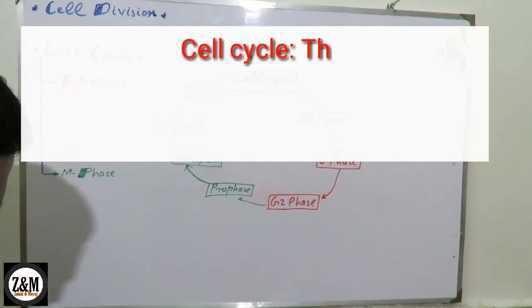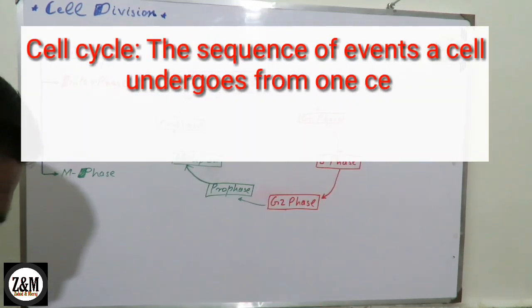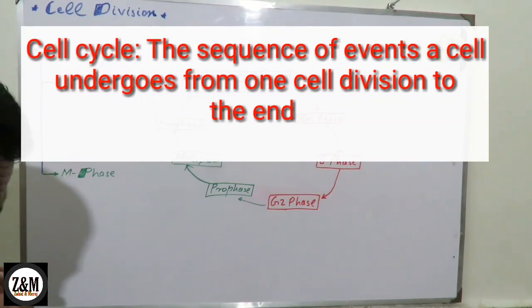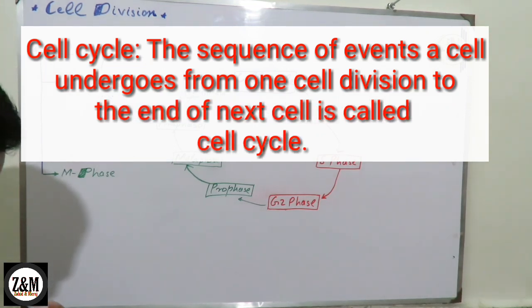The sequence of events a cell undergoes from one cell division to the end of the next is called the cell cycle.